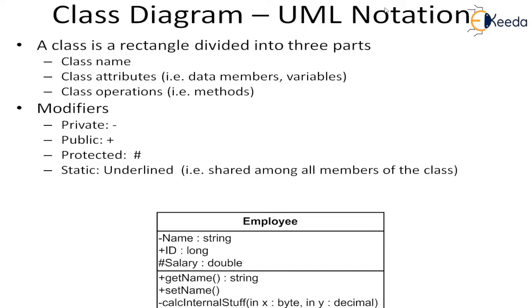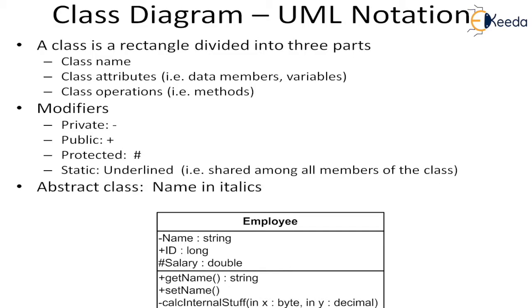Now we come to the class diagram, which normally follows the UML notation. There will be three elements to a class: the name or identifier, the attributes, and the operations. A class is a rectangle divided into three parts — class name, attributes, and operations. There will be modifiers attached to either the attribute or the operation to denote their nature. If there is an abstract class, it can be denoted in italics.